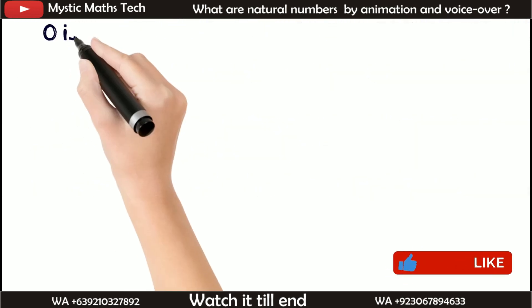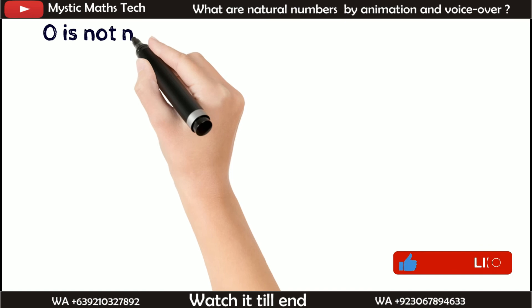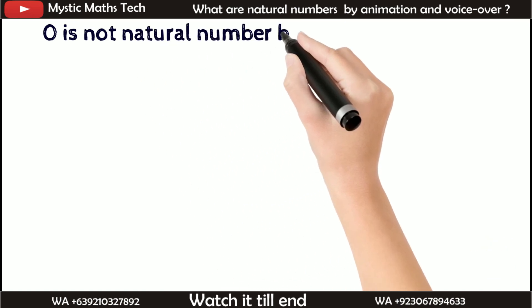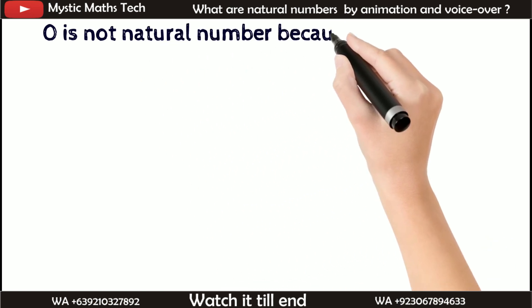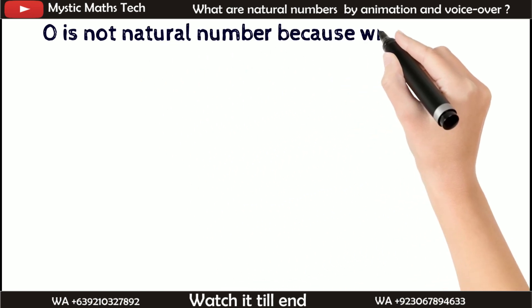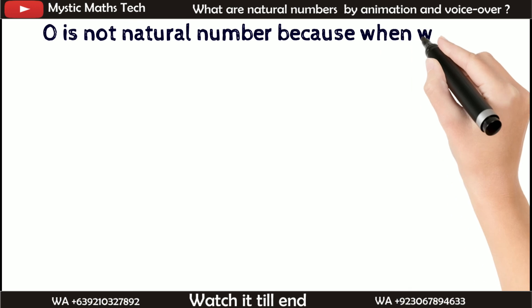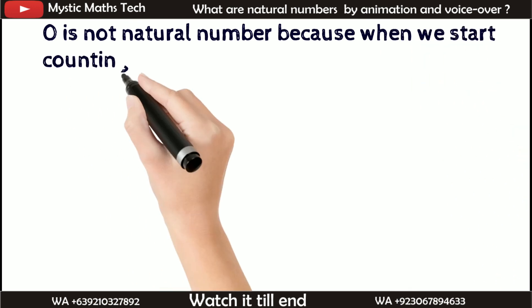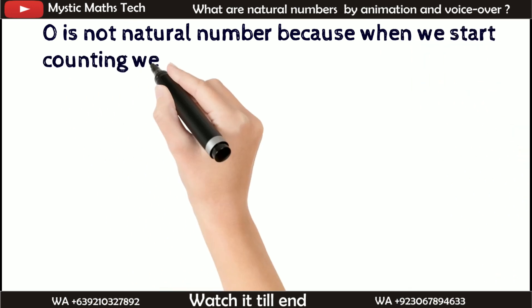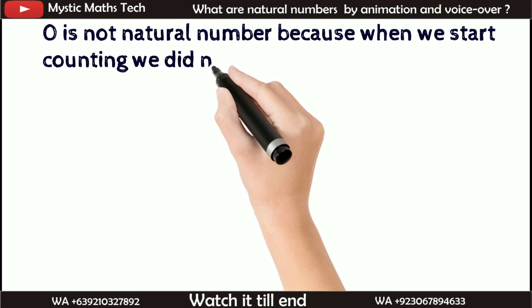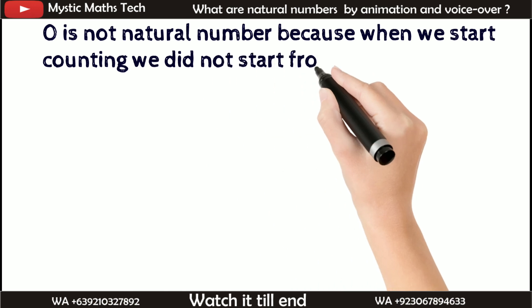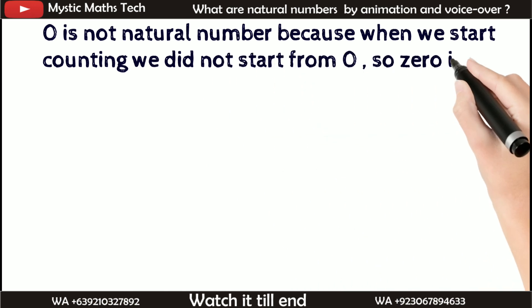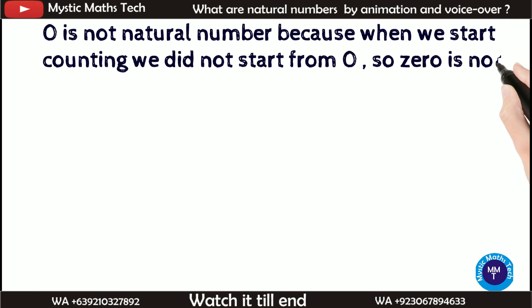0 is not a natural number, because when we start counting we do not start from 0. So 0 is not a natural number.